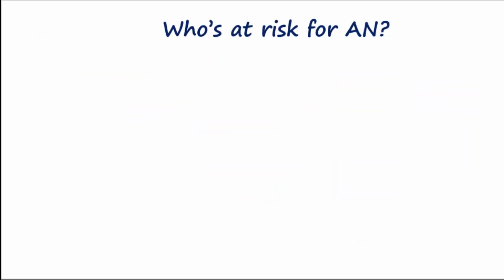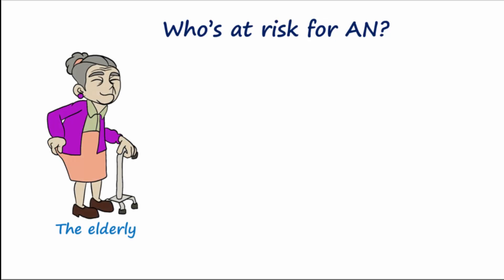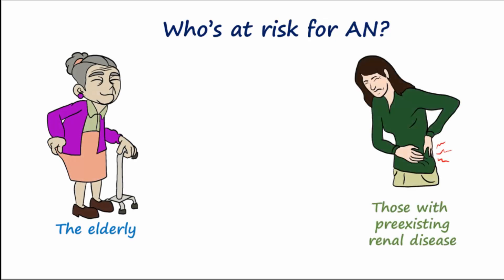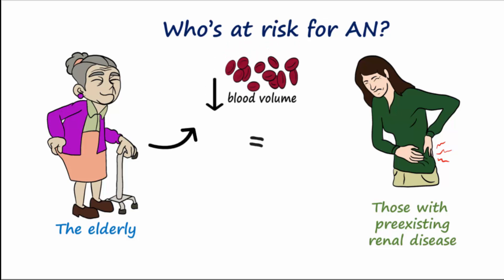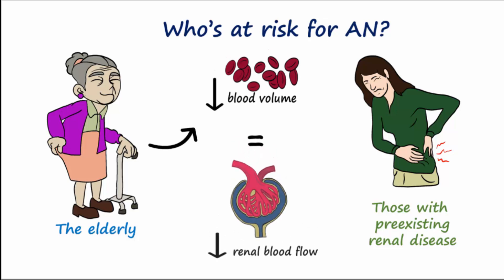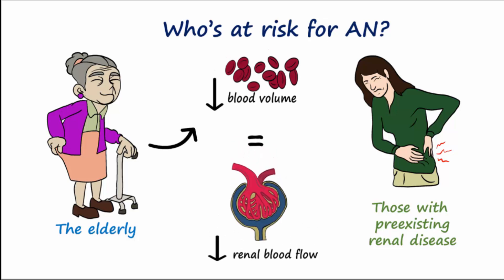The elderly and those with pre-existing renal disease are particularly prone to developing AN. The elderly tend to have decreased blood volume, and therefore decreased renal blood flow. NSAIDs also decrease renal blood flow, compounding the risk for kidney damage in these patient populations.